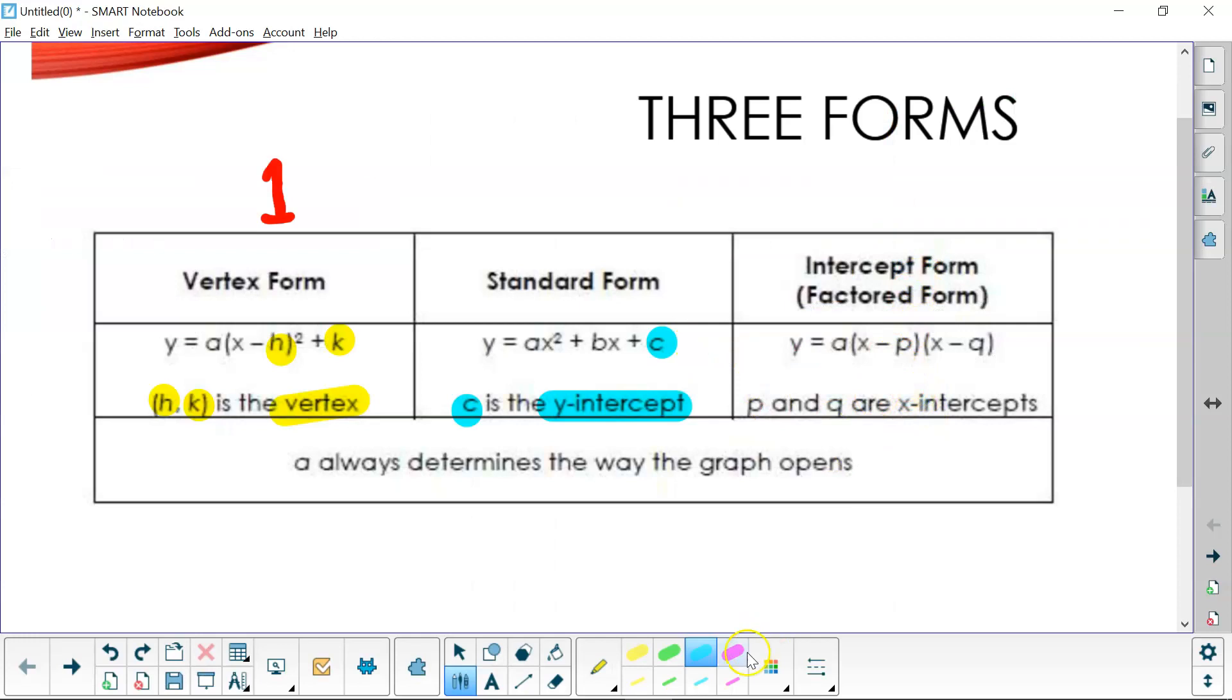Now for intercept form, this is y equals some number a times (x - p) times (x - q), where p and q are your x-intercepts.